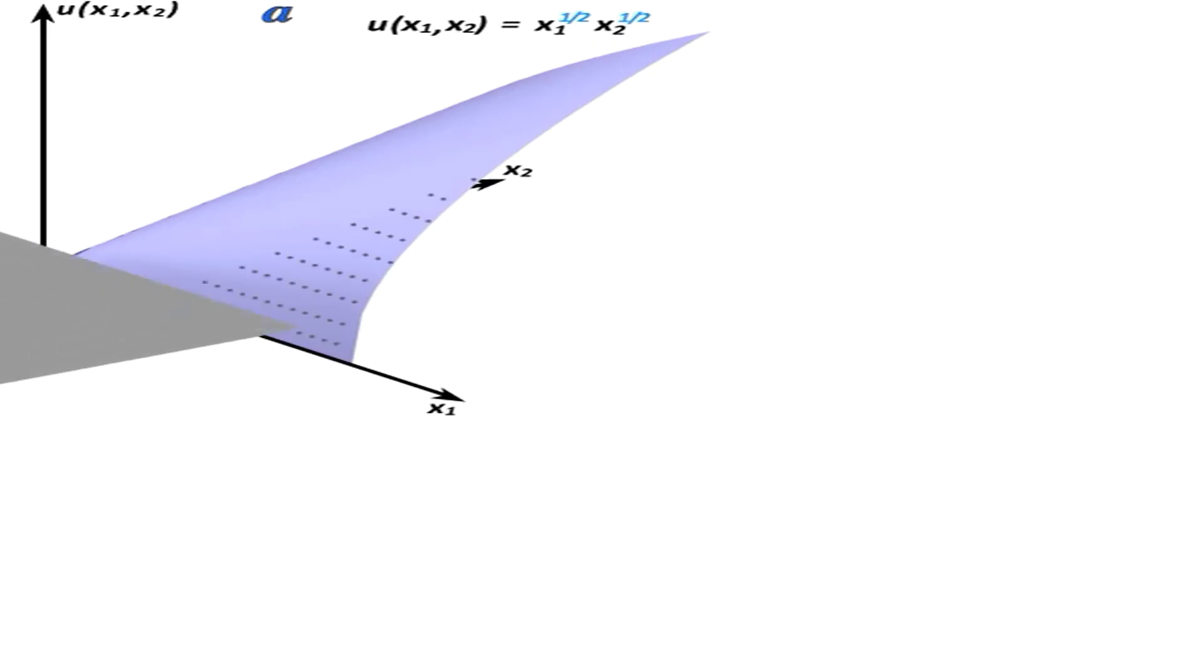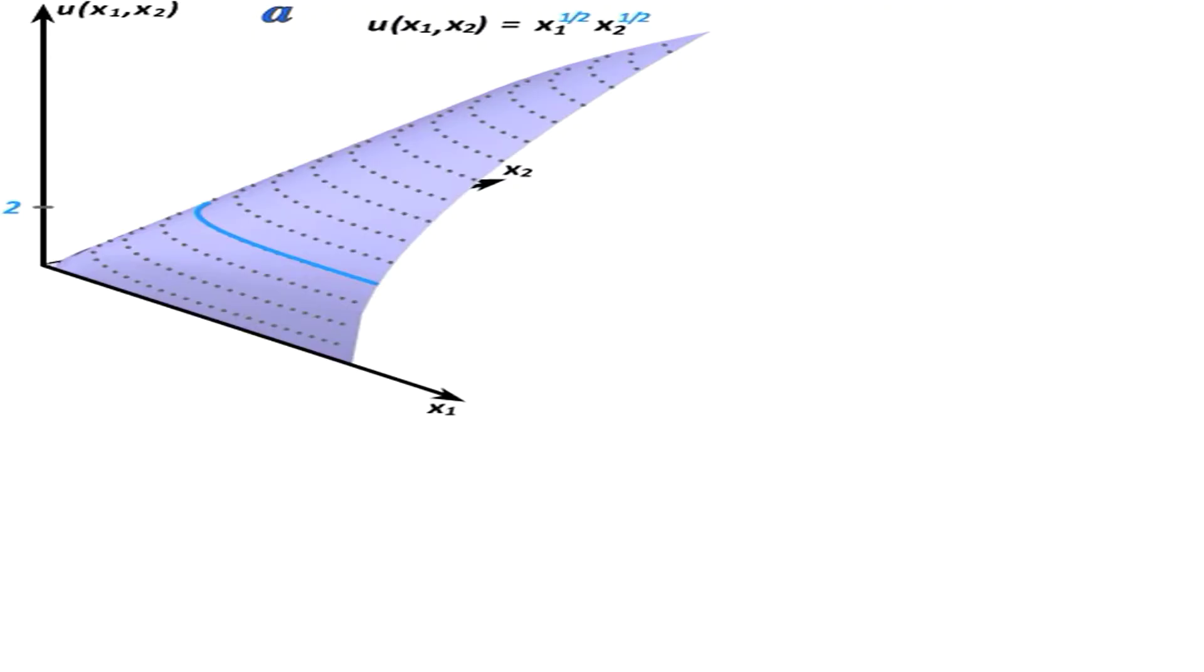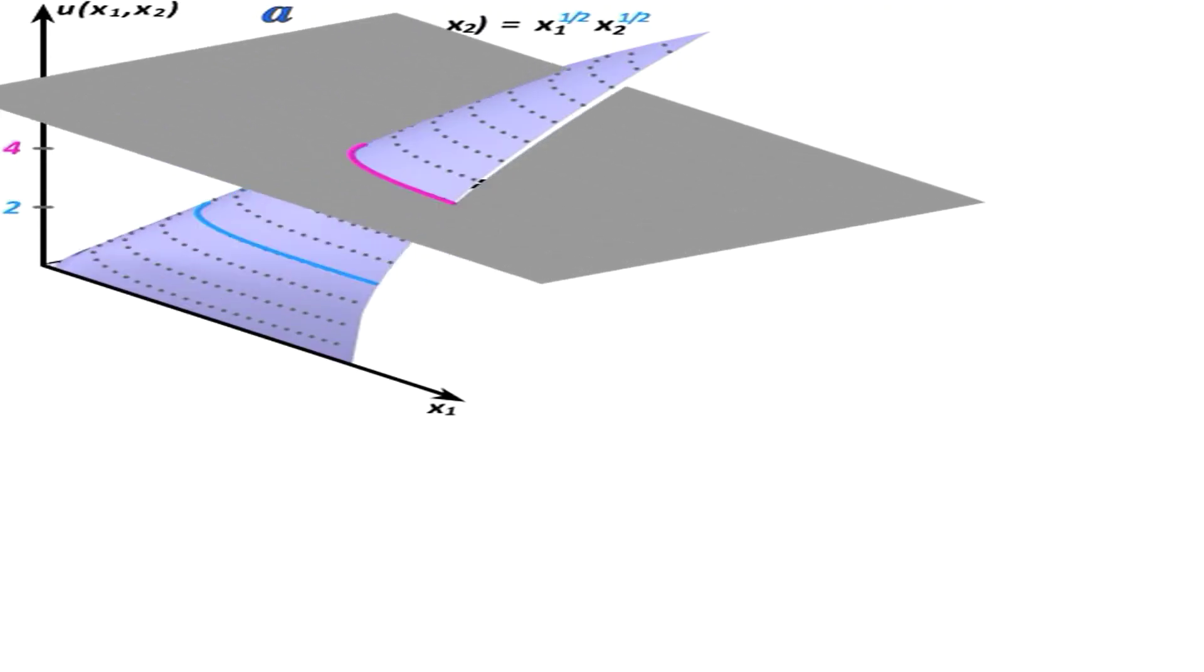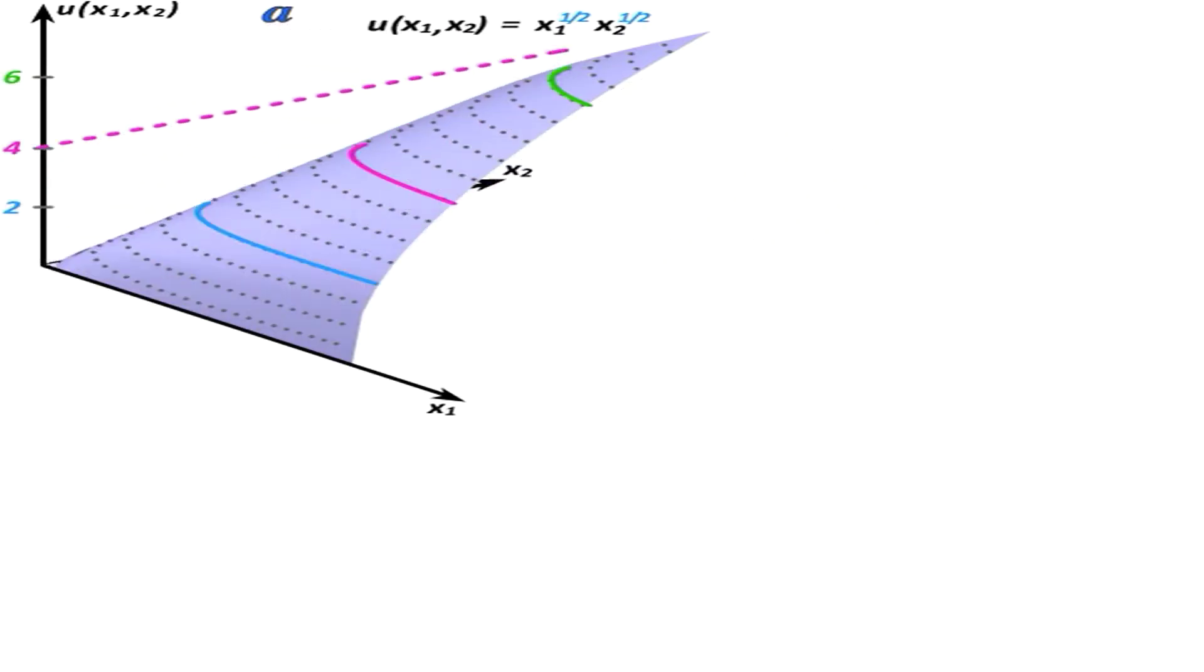If we now want to find all the bundles that give us utility level 2, we simply go to the height 2 and take a horizontal slice of this utility function. We can similarly ask what are all the bundles that give us utility level 4 or utility level 6 and take a similar horizontal slice of the function.